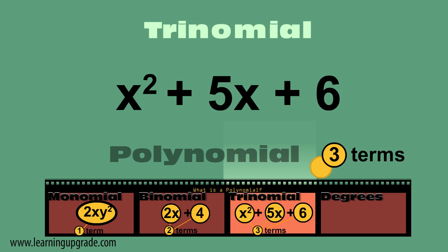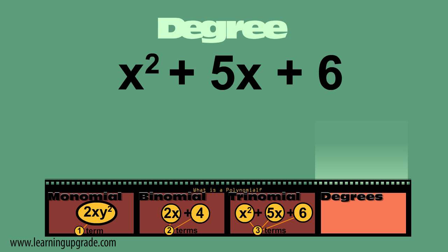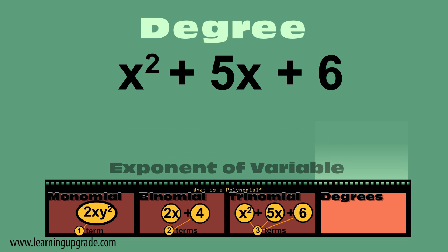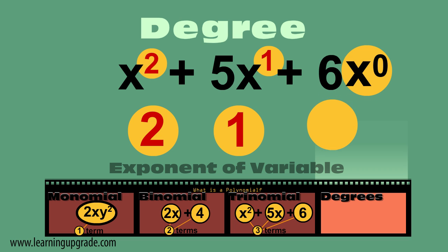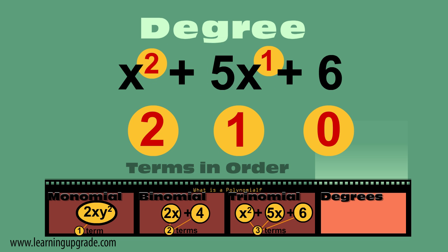What's the degree of a term? The degree of a term is the exponent of the variable. x squared degree 2, 5x degree 1, 6 degree 0.